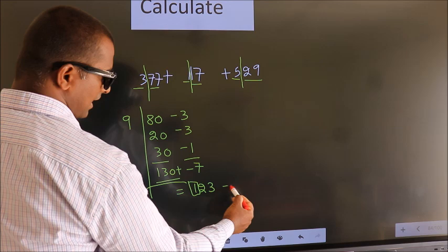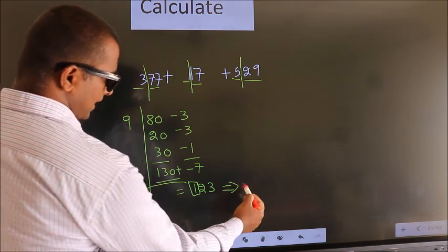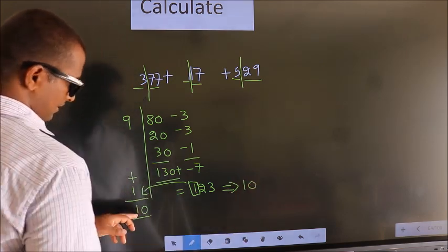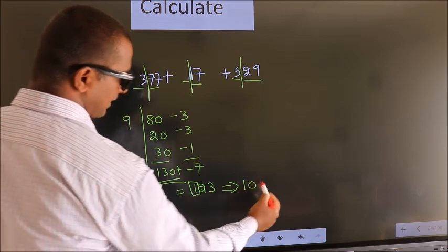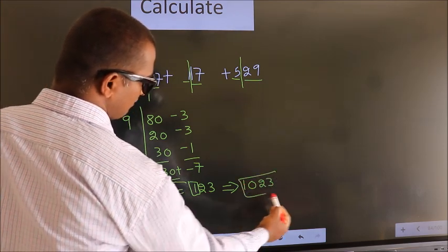So now our answer is, first this we write 10, followed by this 23. So, this is our answer.